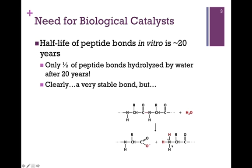We'll add the oxygen to the carbonyl carbon to form the carboxyl group on one end, and we add the two hydrogen atoms to the nitrogen to form the amine group on the other end. The half-life of peptide bonds in vitro — that is, outside the cell — is about 20 years. So if I had a test tube of protein, after 20 years half of those peptide bonds would still be intact. Clearly, a very strong, very stable bond.